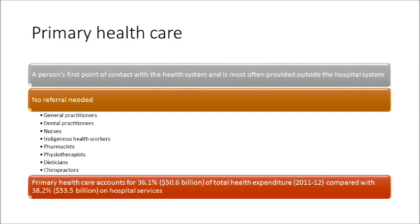Primary health care is delivered in a variety of different settings, and these include places like general practices, Aboriginal and community-controlled health services, community health centres, and allied health services. It's also delivered within the community and could incorporate activities such as public health promotion and prevention.